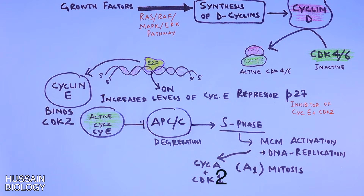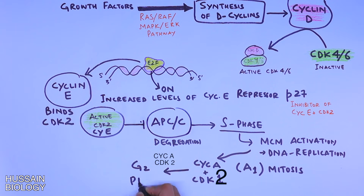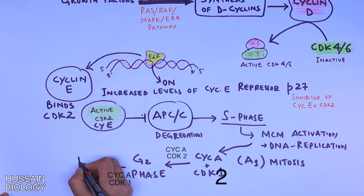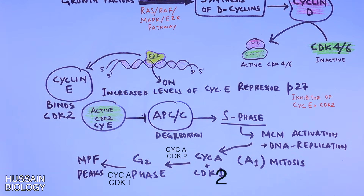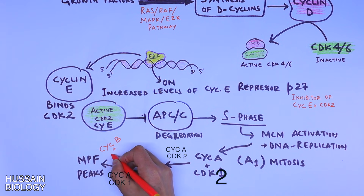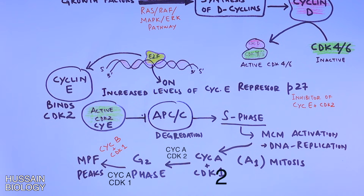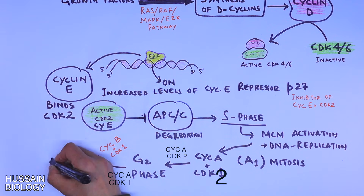Moving into G2 phase, cyclin A and CDK2 drives the transition from S to G2 phase. In G2 phase, cyclin A binds CDK1, and at the end of G2 phase there are peak levels of MPF — that is cyclin B and CDK1 — which drives the G2 to M phase transition.